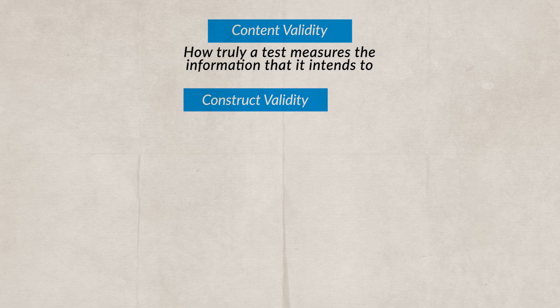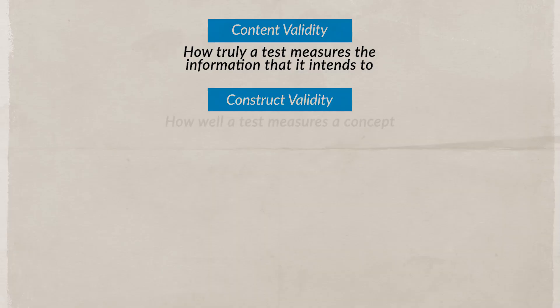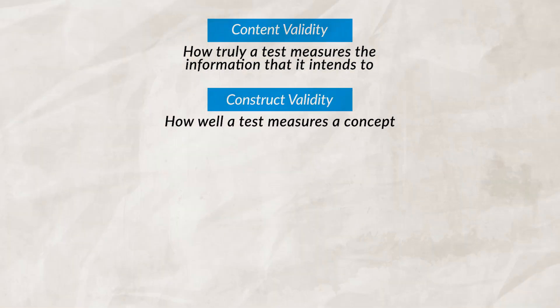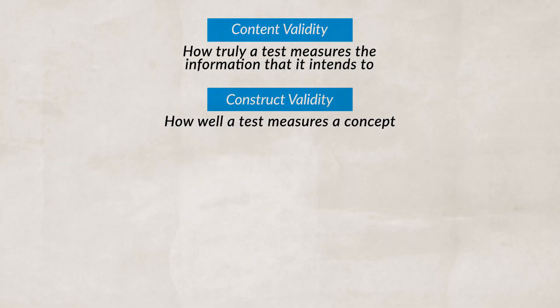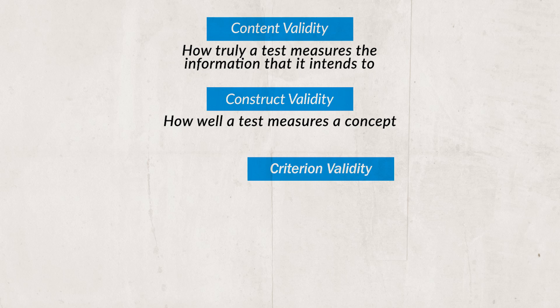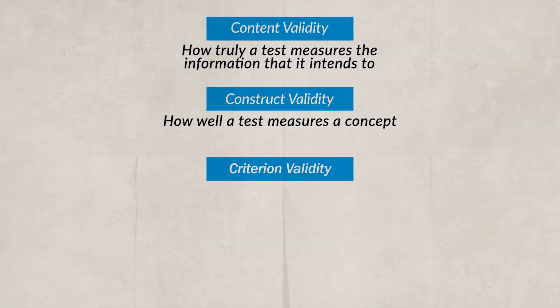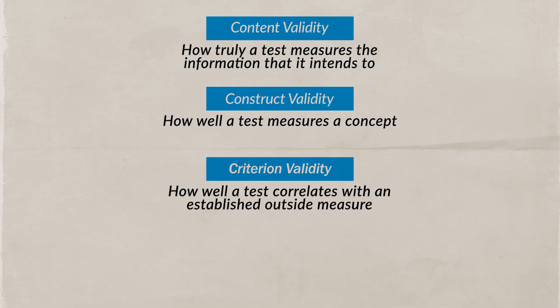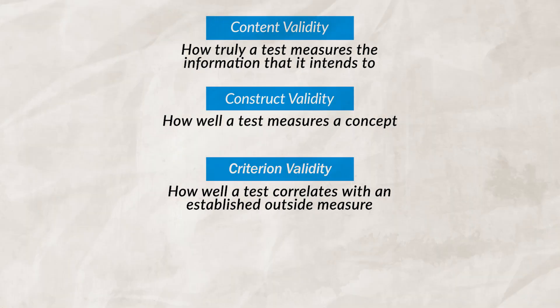There's also construct validity, which is the degree to which a test can actually measure a specific trait or concept. Criterion validity checks to see if the test correlates with any outside variables or measures, showing how well the test correlates with a standard comparison. If criterion validity is low, the test may not be valid.